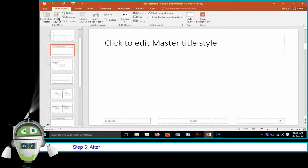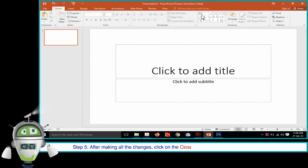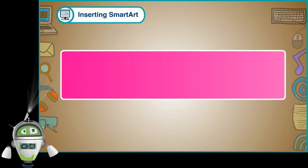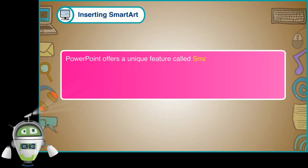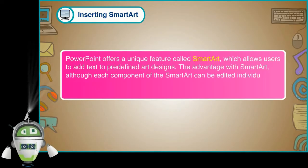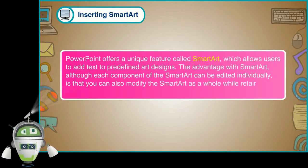Step 5: After making all the changes, click on the Close Master View option to close the Slide Master. The changes made in the master file will appear in all the slides. Inserting Smart Art. PowerPoint offers a unique feature called Smart Art, which allows users to add text to predefined art designs. Although each component of the Smart Art can be edited individually, you can also modify the Smart Art as a whole while retaining these settings on each individual component.